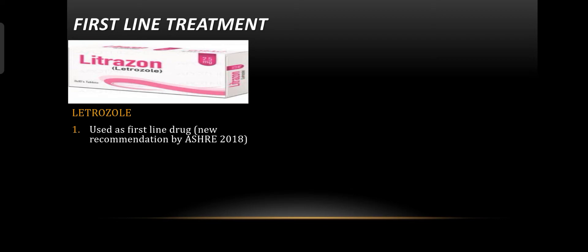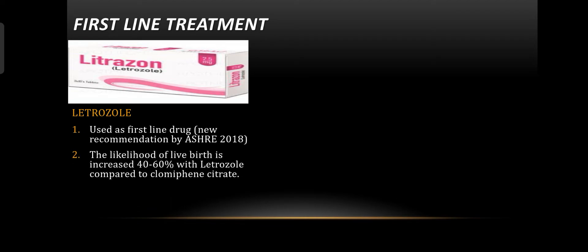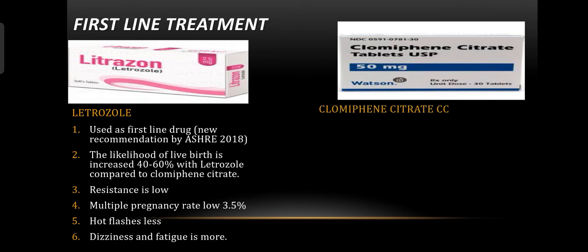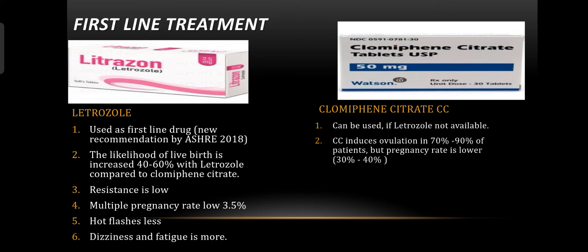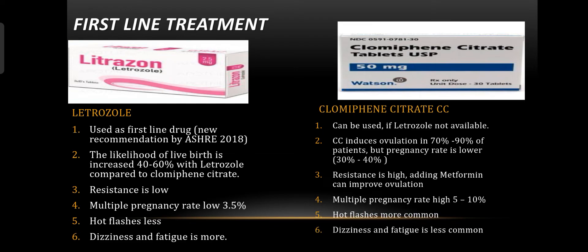Letrozole is used as the first-line drug — a new recommendation by the ESHRE 2018 guideline. The likelihood of live birth is increased by 40 to 60 percent with letrozole compared to clomiphene citrate. Its resistance is low, multiple pregnancy rate is low at around 3.5 percent, and hot flashes are low. Dizziness and fatigue are more common with letrozole. On the other hand, clomiphene citrate can be used if letrozole is not available. Clomiphene citrate induces ovulation in 70 to 90 percent of patients, but the pregnancy rate is lower at 30 to 40 percent. Its resistance is high, multiple pregnancy rate is high at 5 to 10 percent, and hot flashes are more common, while dizziness and fatigue are less common compared to letrozole.